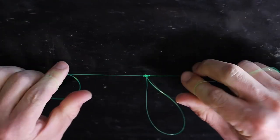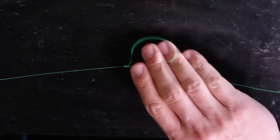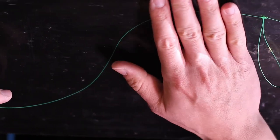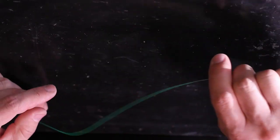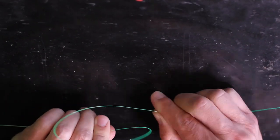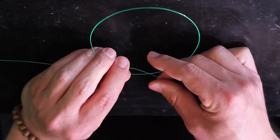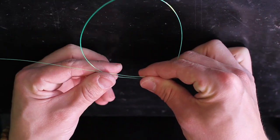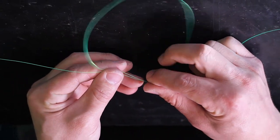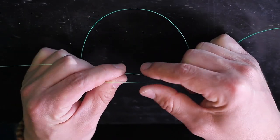The second dropper loop goes about 12 inches from the first one. Just like that, with your hands, spin it again eight times.